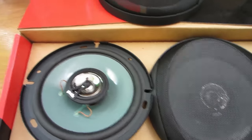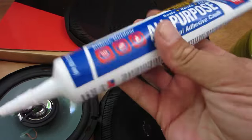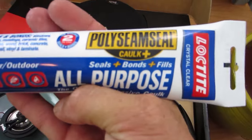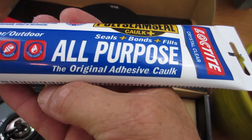The things you need are primarily something like this. What this actually is, this is a poly seam seal caulk. Seals, bonds, fills, all purpose, the original adhesive caulk.